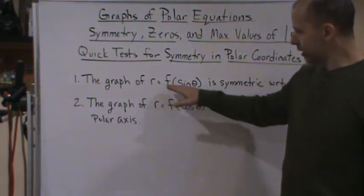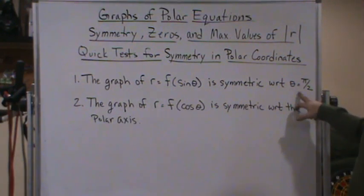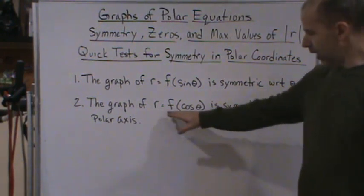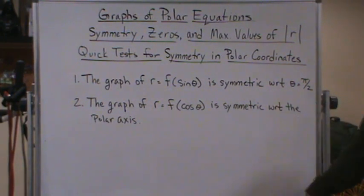So if you have r as a function of sine, it's going to be symmetric with respect to the line pi over 2. If r is a function of cosine, then you're going to have symmetry with respect to the polar axis.